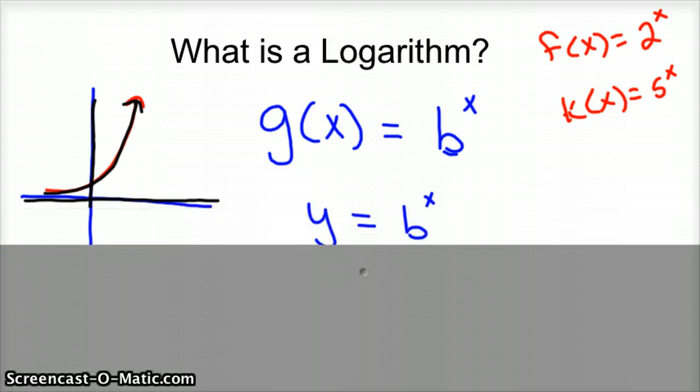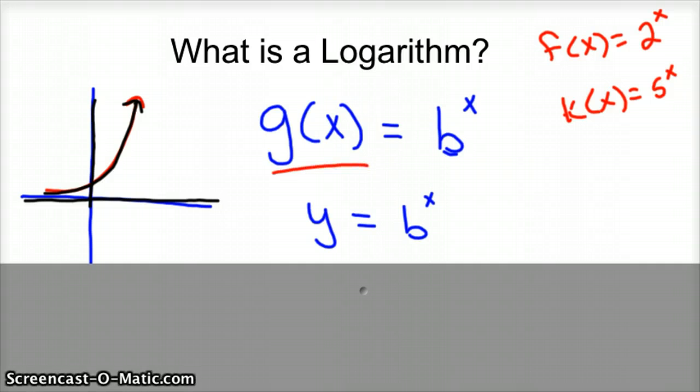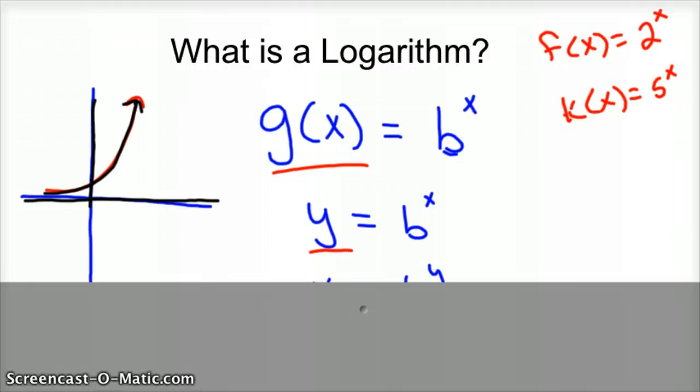So let's find that inverse. Well, the first step in that process is to convert the g(x), or the function notation, to a simple y. So y, or your output of y-axis, equals b to the x-axis, b to the x power.